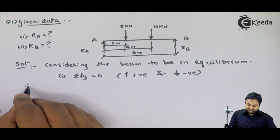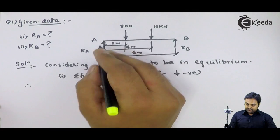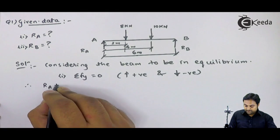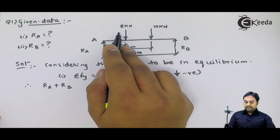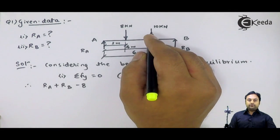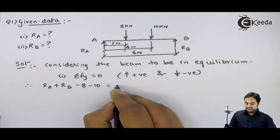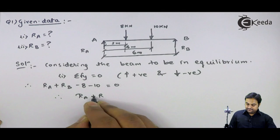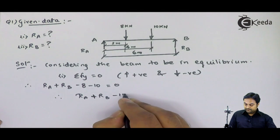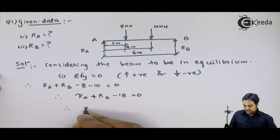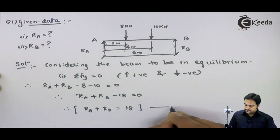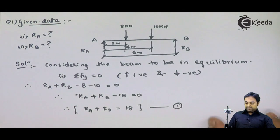As per the convention: RA is positive because it is an upward reaction at A; RB is also positive because it is an upward reaction at B; 8 kilo Newton is downward so negative; 10 kilo Newton is also downward so negative — that equals 0. Hence RA plus RB minus 18 equals 0, therefore RA plus RB equals 18. This is Equation 1.